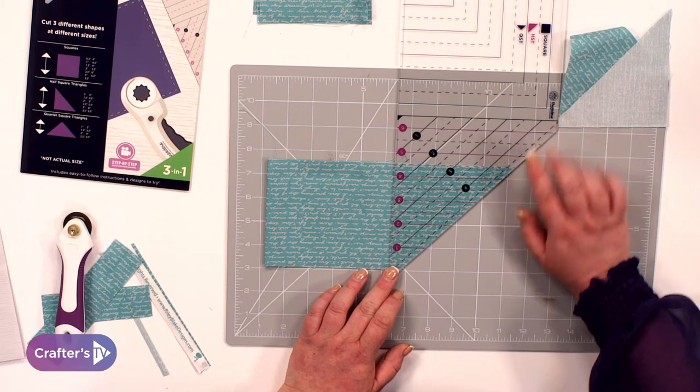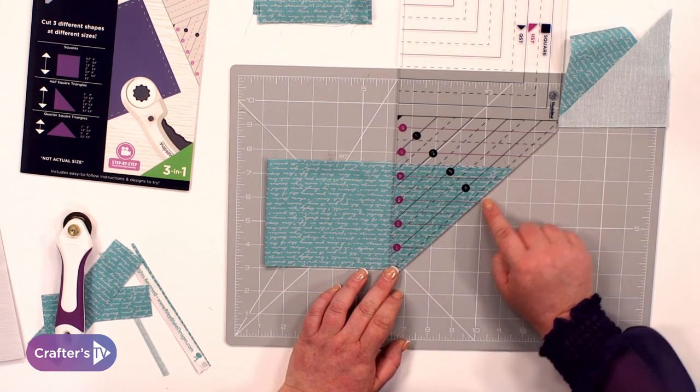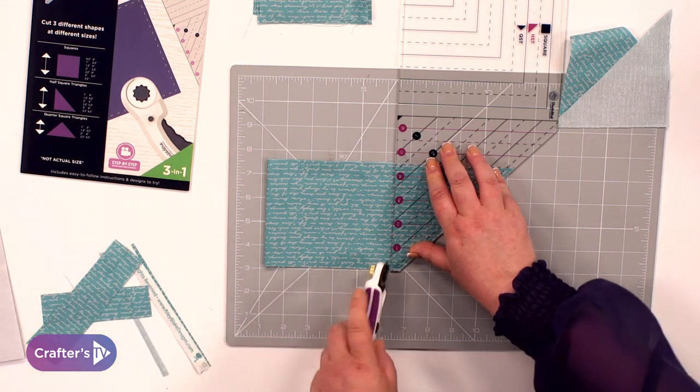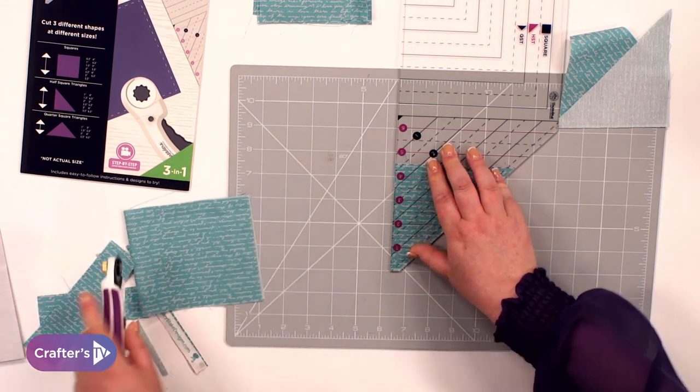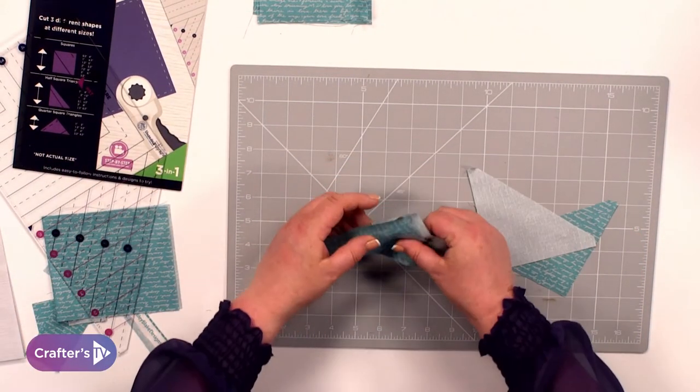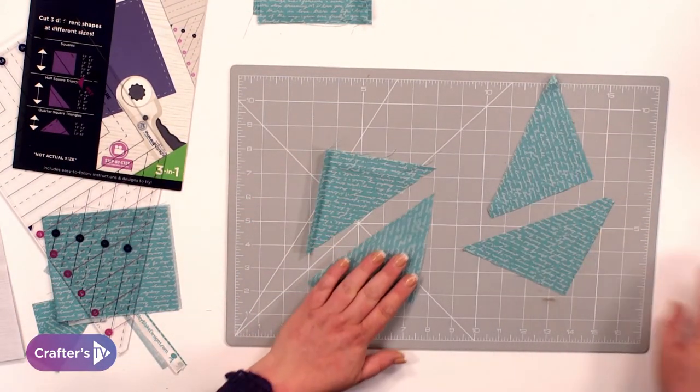Again, line those edges up. So I've got the line here, I've got the edge of the fabric here and the top bit lined up there and then you're going to come up the other side and we've now cut another four.